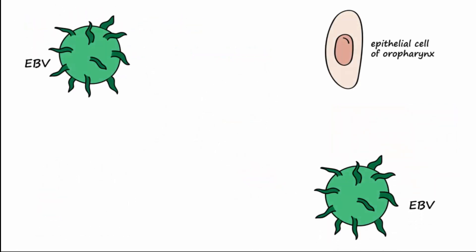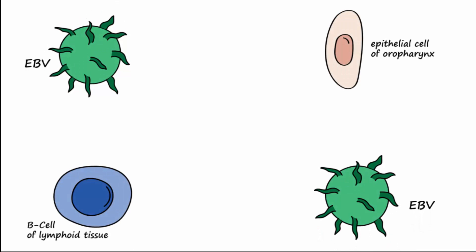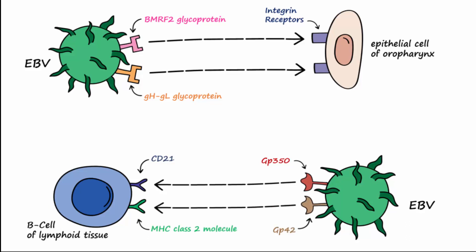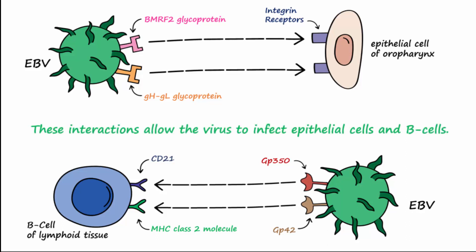Once in the oropharynx, the virus primarily infects epithelial cells and then the deeper B cells in lymphoid tissue. The glycoproteins BMRF2 and GHGL on the virus will bind to integrin receptors on epithelial cells. GP350 on the virus binds to CD21 on B cells, and GP42 on the virus will bind to MHC class II molecules on the B cells. These interactions allow the virus to infect the epithelial cells and B cells.